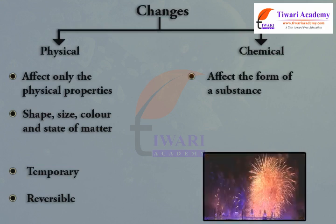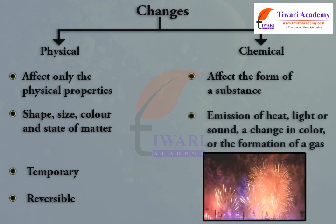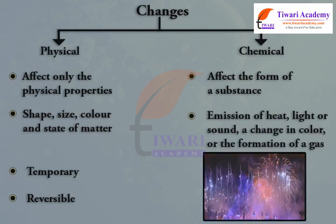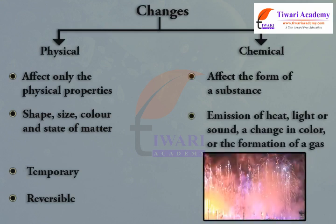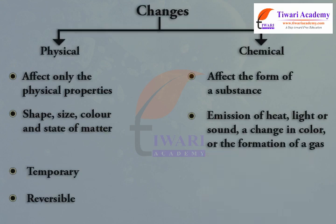Chemical changes may be accompanied by the emission of heat, light, or sound, a change in color, or the formation of a gas. Some properties of chemical changes are: a chemical change is permanent, and a new substance is formed.